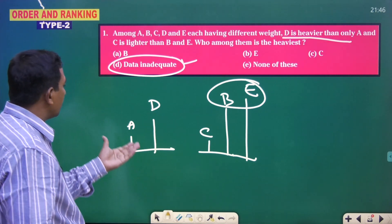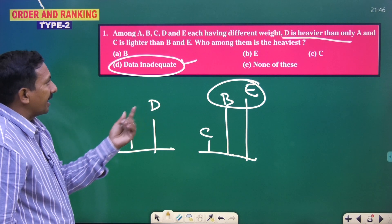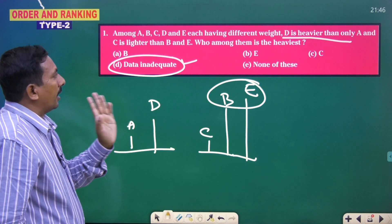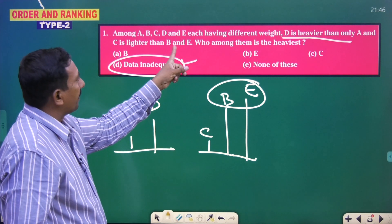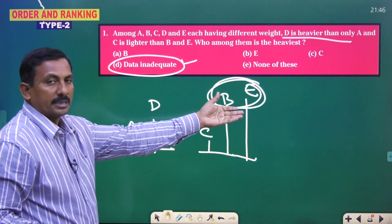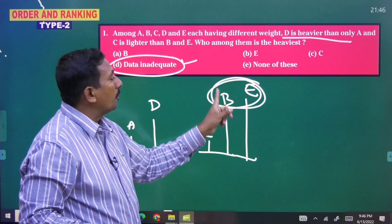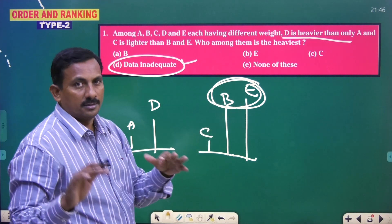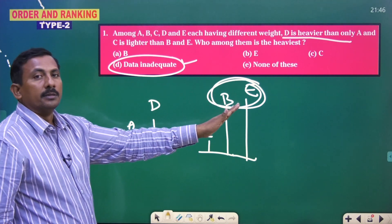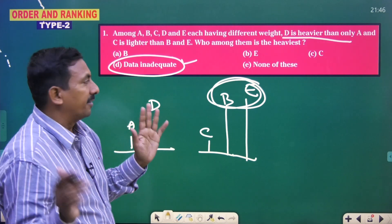Because D is heavier than only A. And C is lighter than B and E. Both B and E are heavier than C. But what about B and E? Who is heavier? Who is lighter? We don't know. As well as what about A, D with C and B combination? We don't know. So here data is inadequate.